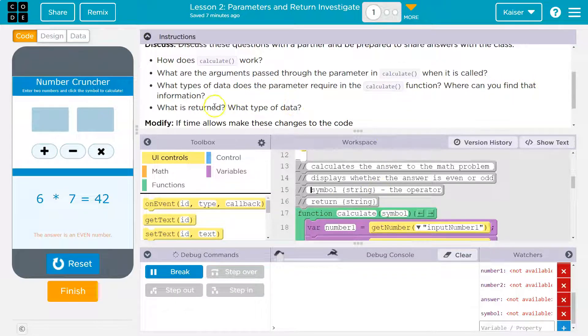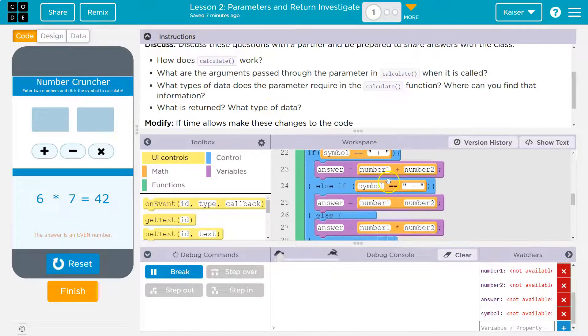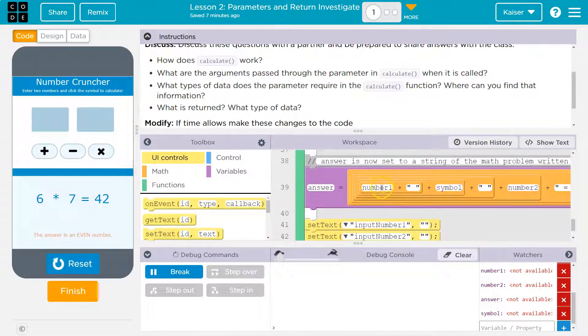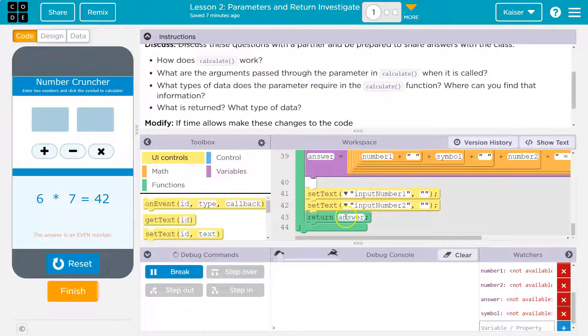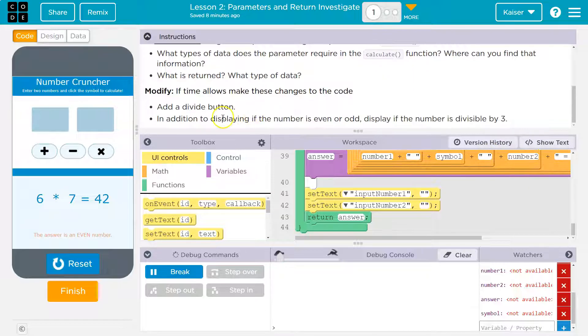All right. What types of data? Where can you find? What is returned? The return data type is a string, like we said, because at the end, answer becomes this with all these quotes. Anything that's going to have quotes in it, guys, is going to be a string, unless it's one character. If time allows, make these changes. Add a divide button.